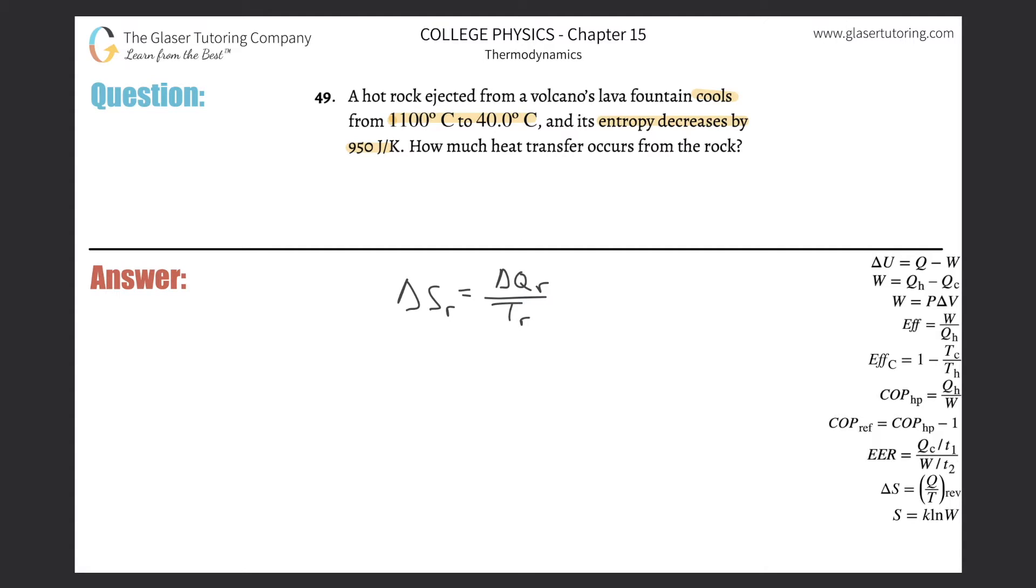Now, we're dealing with all change values here. The temperature that we need to utilize in this formula is the average temperature, not the change in temperature, but the average temperature. So we have two temperatures here, but we've got to find the average value between those two.